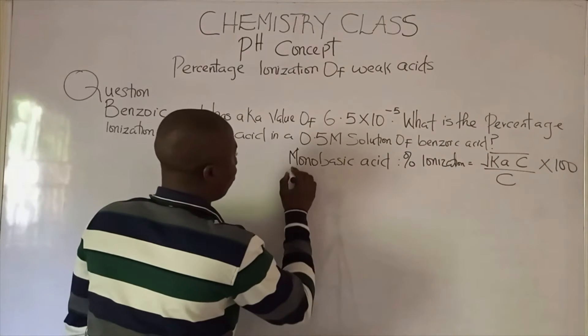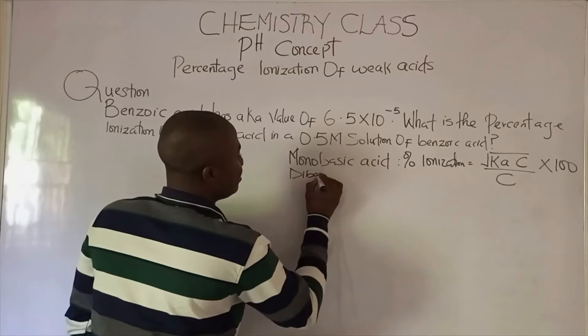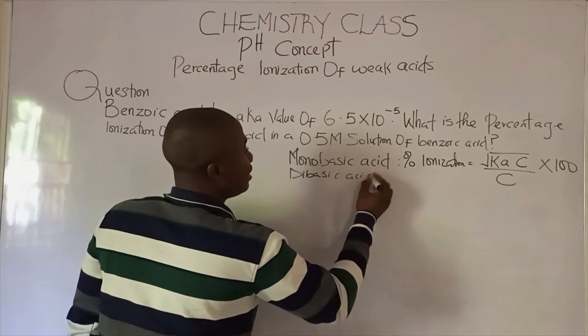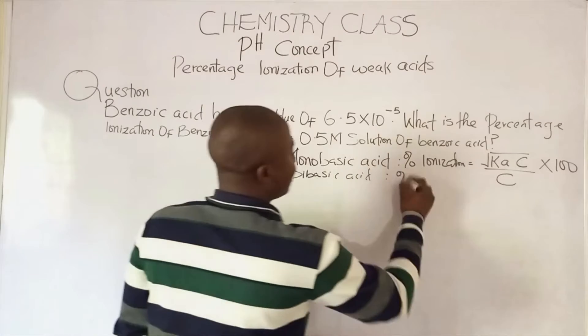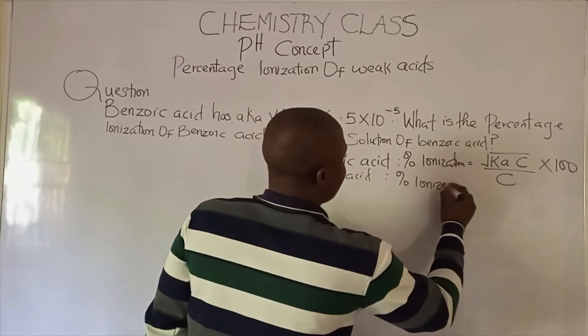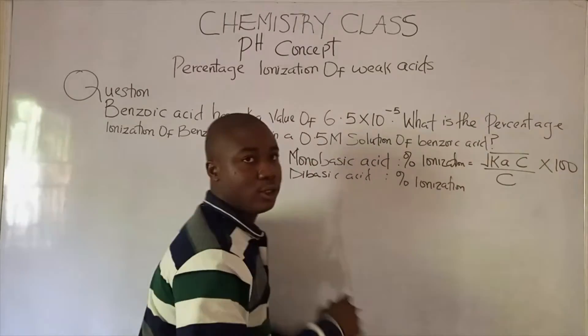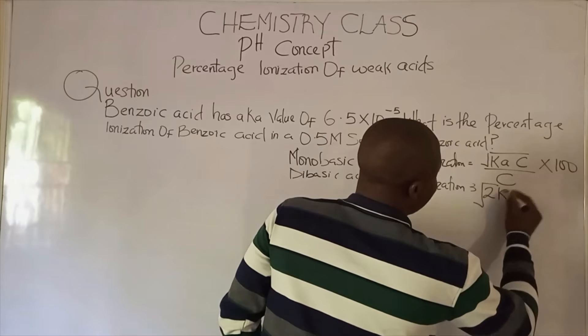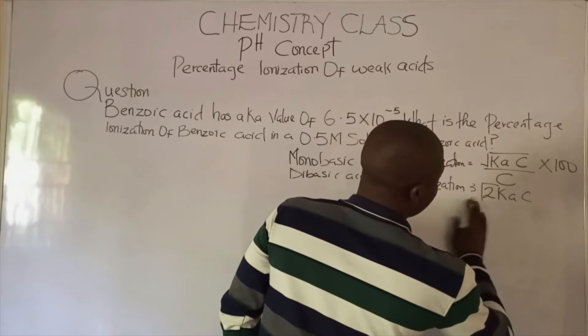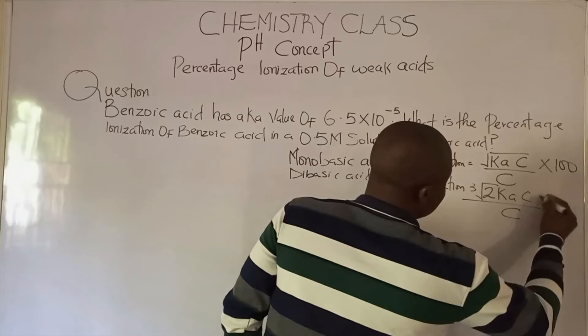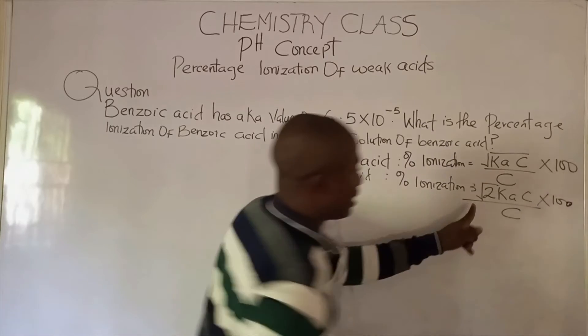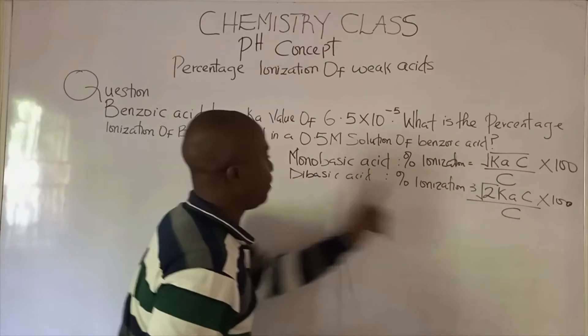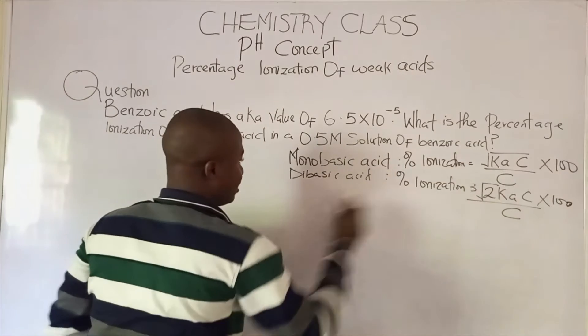For a di-basic acid, percentage ionization is simply the cube root of 2Ka times c over c, times 100. Because in this context the acid is dibasic, that's why it is 2.